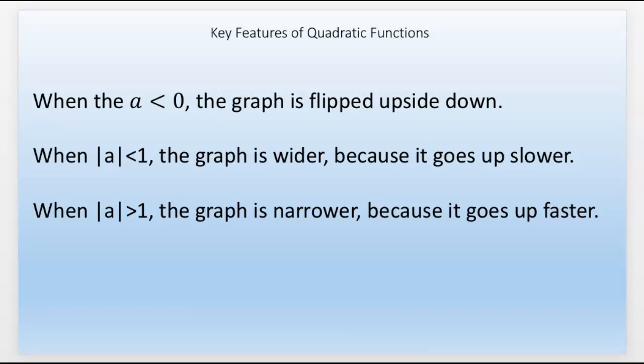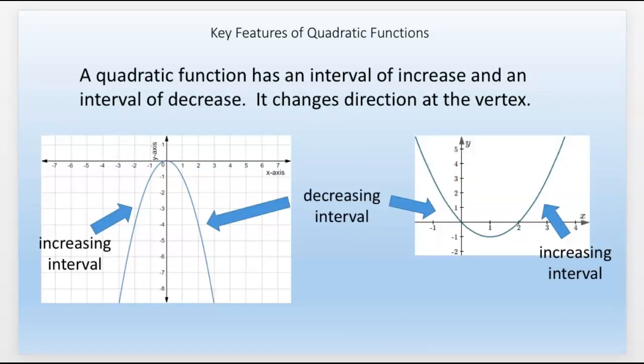When the absolute value of a, in other words, when a is smaller than 1, the graph is wider because it goes up slower. That's also true if a is a half or if a is like negative a half. It's just upside down, but it's still wider. In that case, it's going down slower than it normally would. And if a is greater than 1, the graph is narrower. It goes up faster, or down faster if it's like negative 6.